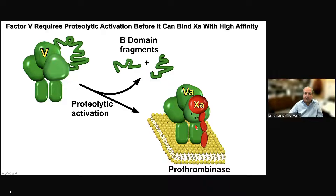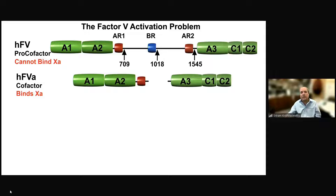So what's the basic biochemistry of the problem? Here is a schematic diagram of Factor 5. In green are the domains that make the business end of the cofactor molecule. In the middle is this very large central B domain with three landmarks: two acidic regions that flank the B domain and a central basic region. When you proteolyze all of this, you get heterodimeric Factor 5a where one acidic region remains, and the basic region and acidic region 2 are gone — allowing it to bind 10a.